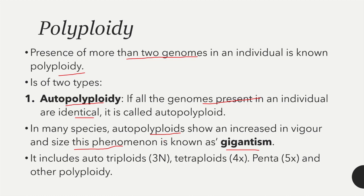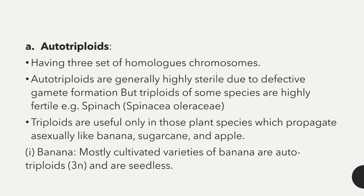Autopolyploids include triploids, tetraploids, and pentaploids depending upon the set of chromosomes. Autotriploids have three sets of homologous chromosomes and are generally highly sterile due to defective gamete formation. However, triploids of some species like spinach are highly fertile.